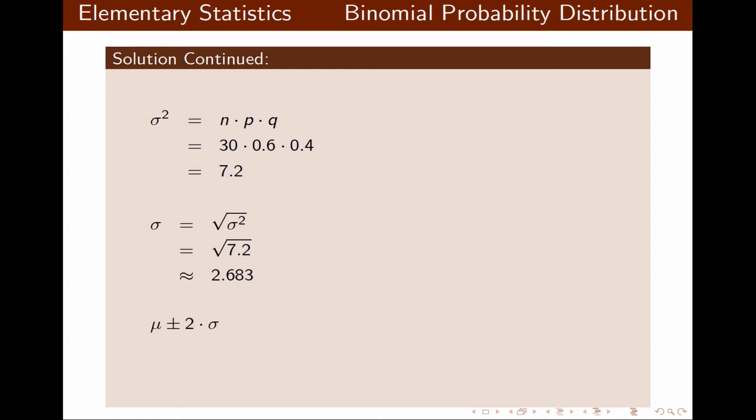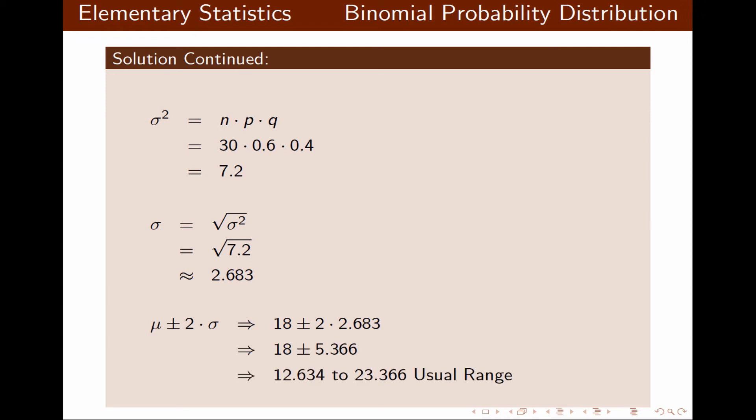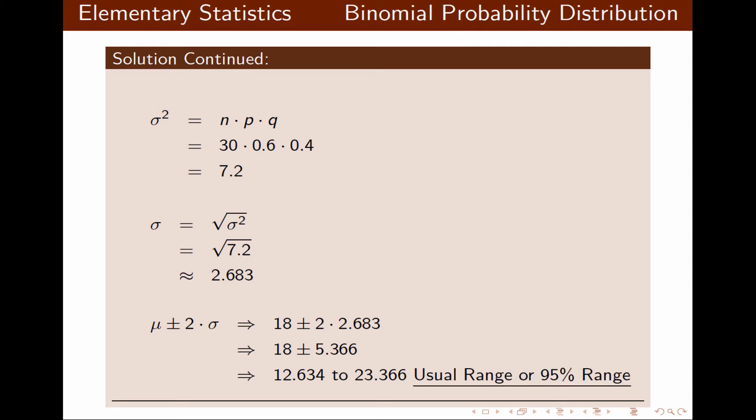For the usual range, according to the empirical rule, it is mu plus or minus 2 times sigma. Plugging in the values, the usual range — which is also the 95% range — is between 12.634 and 23.366. It is possible to round this to the nearest whole number according to the instructions in the problem.